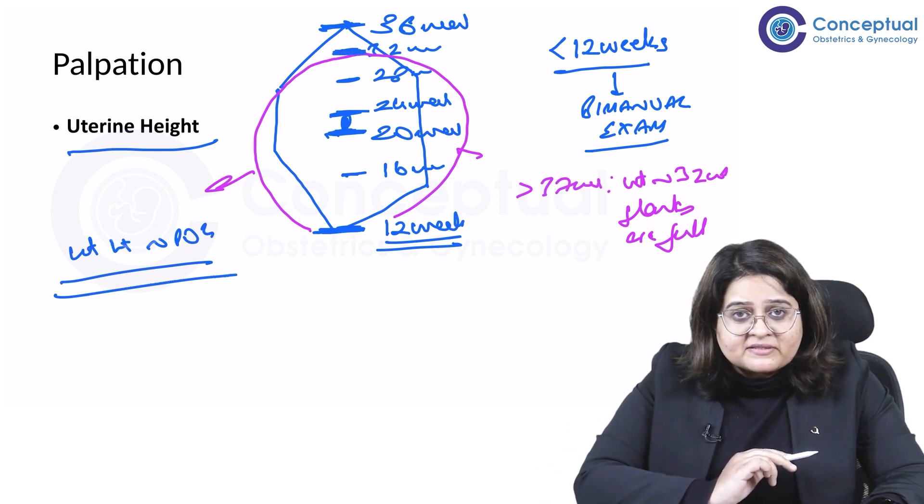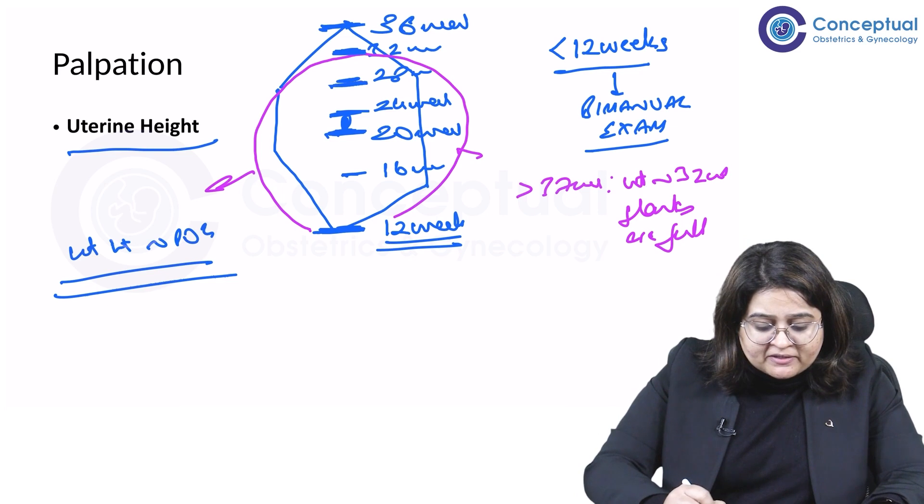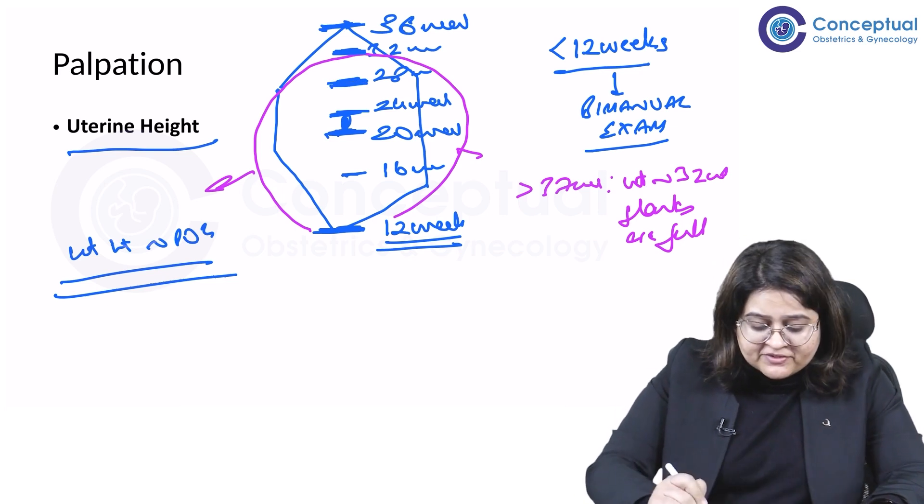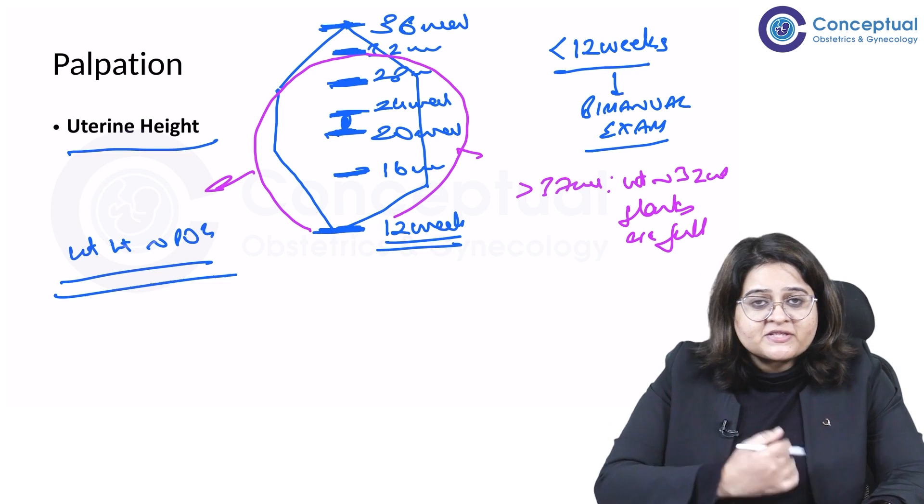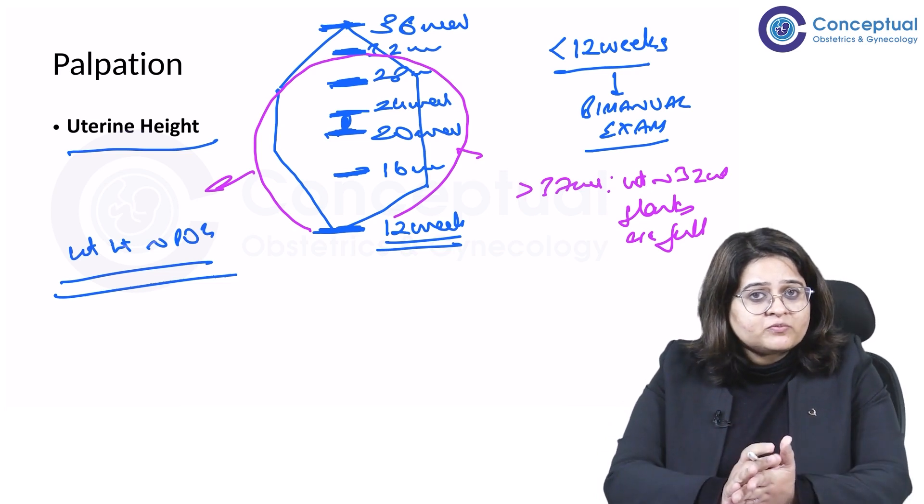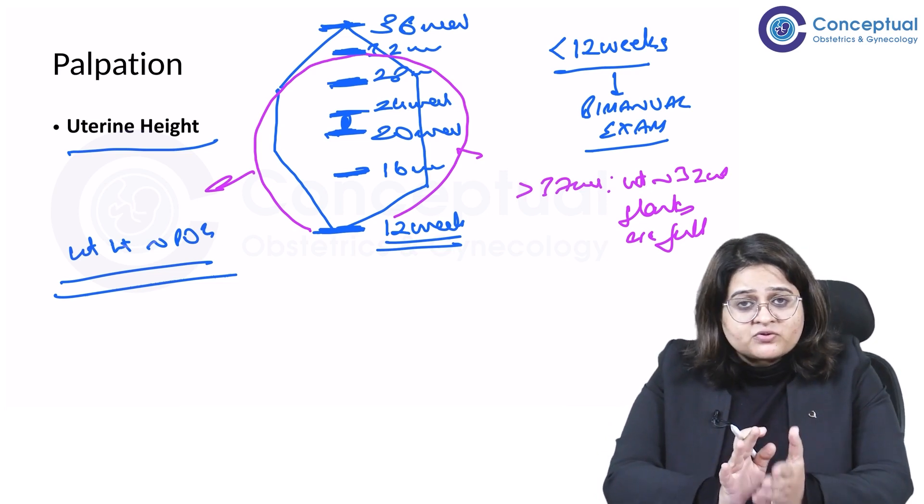If she's 32 weeks pregnancy, this is where I should feel resistance. If she's 28 weeks pregnant, this is where I should feel resistance. If she's 16 weeks pregnant, this is where I should feel resistance. If she's 8 weeks pregnant, I should not be able to palpate the uterus per abdomen.